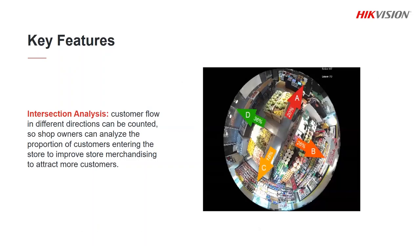Intersection analysis — sometimes called pathway analysis — allows a business owner to understand which directions people enter an area from and which direction they then leave by. A simple example would be: when people enter the main entrance, what percentage go left or right? Like with heat mapping, this information is used to help decide where to place key products in the shop. I'll show this in the live demo in a couple of minutes which will make it clearer.